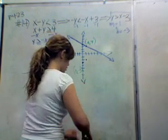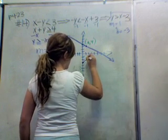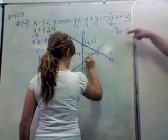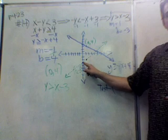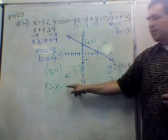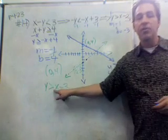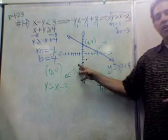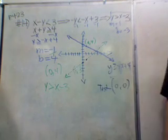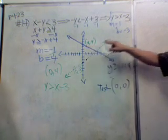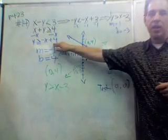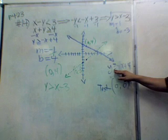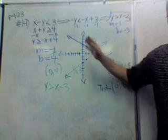It's important to label the graphs. The green line is y is greater than x minus 3. Since there's no equal sign, we draw it as a dotted line — the solutions are not on the line itself. The blue line is y is greater than or equal to negative x plus 4, so it's a solid line, meaning the points on the line are included in our solutions.